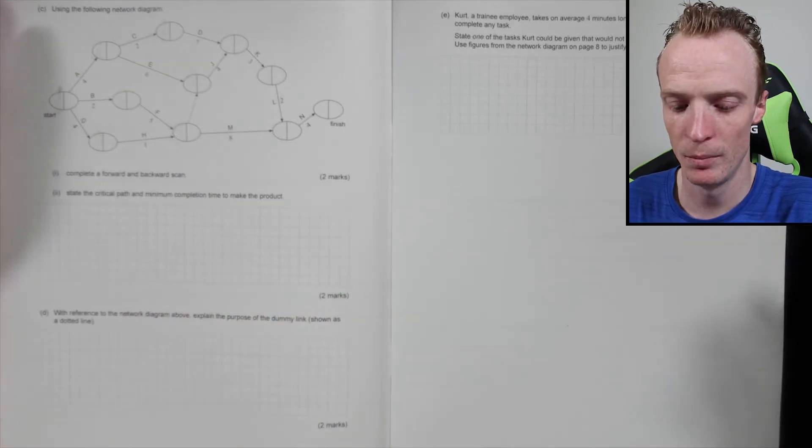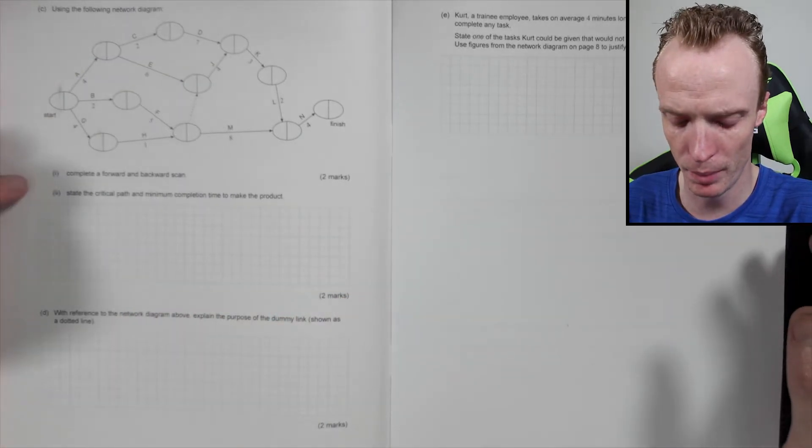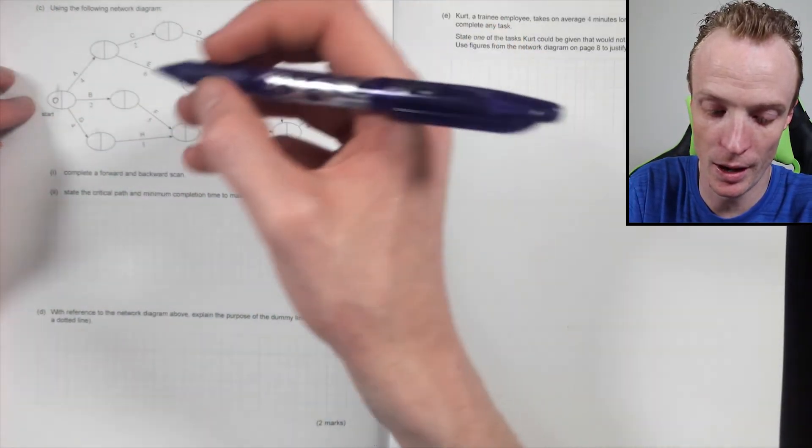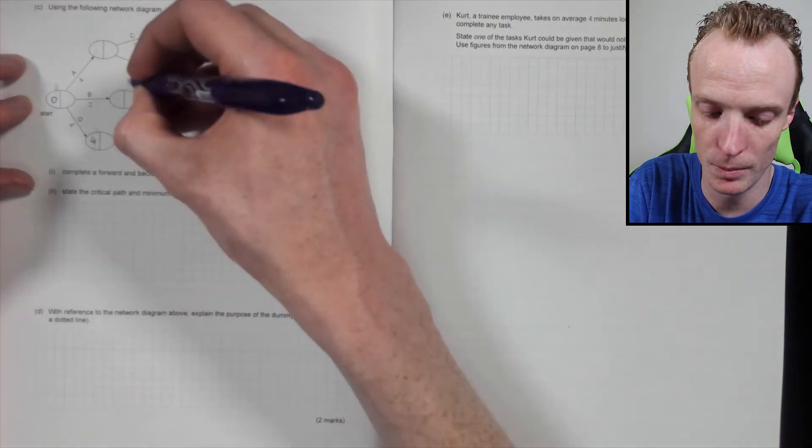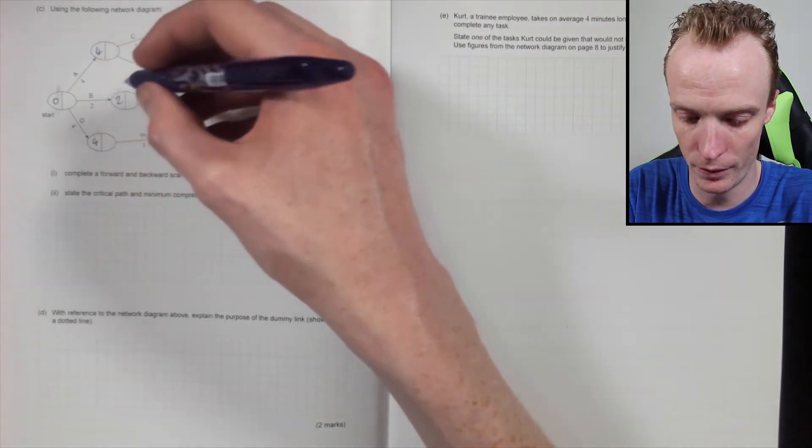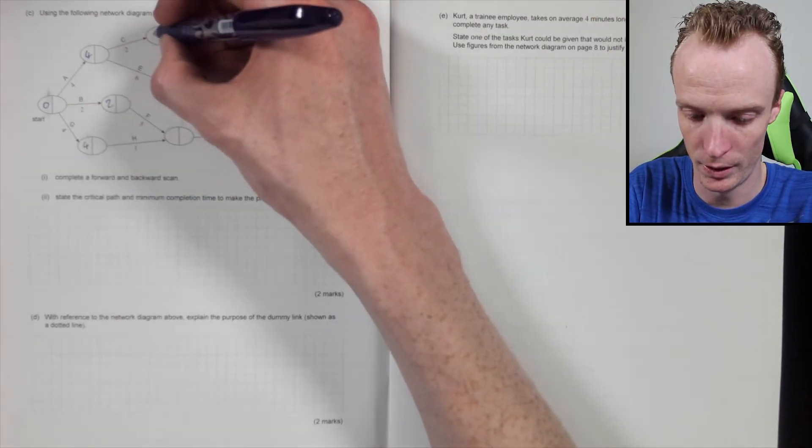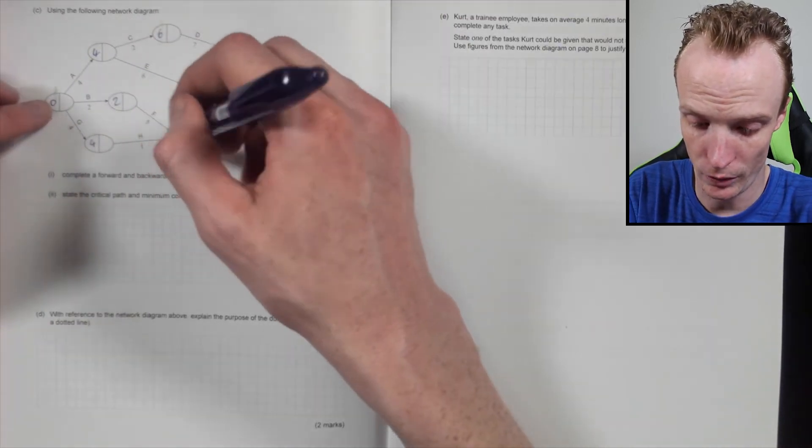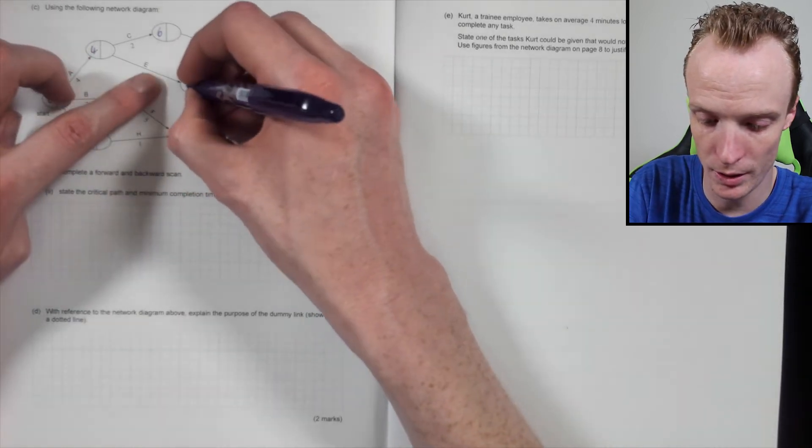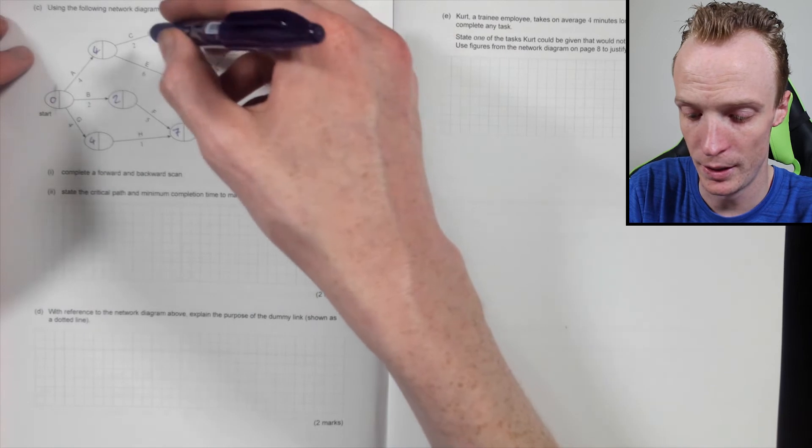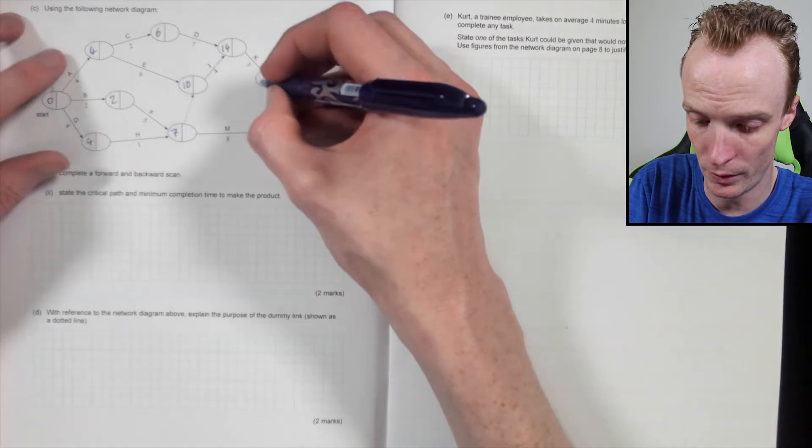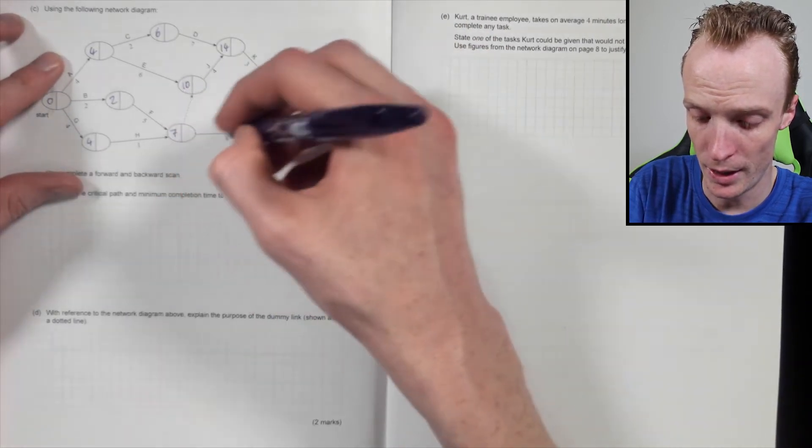Okay, so using the following diagram, complete the forward and back scan. Now during the forward scan you're basically just following these pathways and using the highest number each time. So that'll be 4, that'll be 2, that'll be 4. Then we will have 4 plus 2 is 6, that one's nice and easy. 2 + 5 is 7, so that'll be 7 there because that's 5. 7 or 10, so that'll have to be 10.